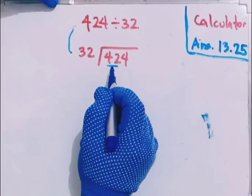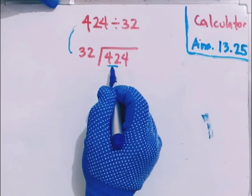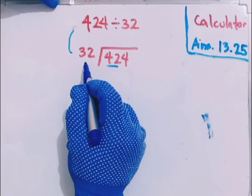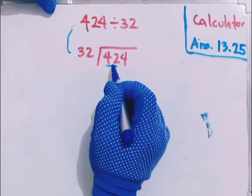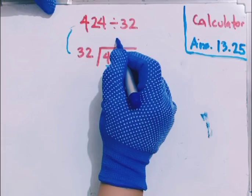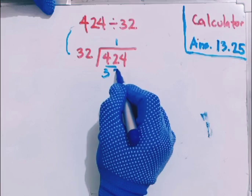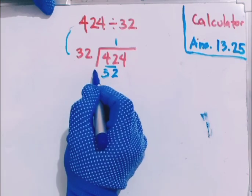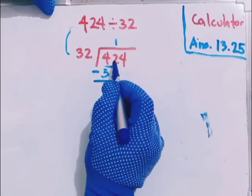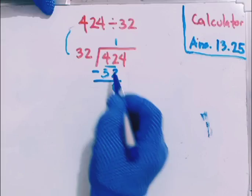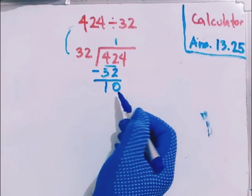Now 4 and 2 together is 42. 42 divided by 32, can it be? Yes, because your dividend is higher than your divisor. Therefore we can now divide. That's the rule. 42 divided by 32 is 1. 1 times 32 is 32. The next step is we need to subtract 42 minus 32. Now 2 minus 2 is 0, 4 minus 3 is 1. We're left with the value of 10 in our dividend.